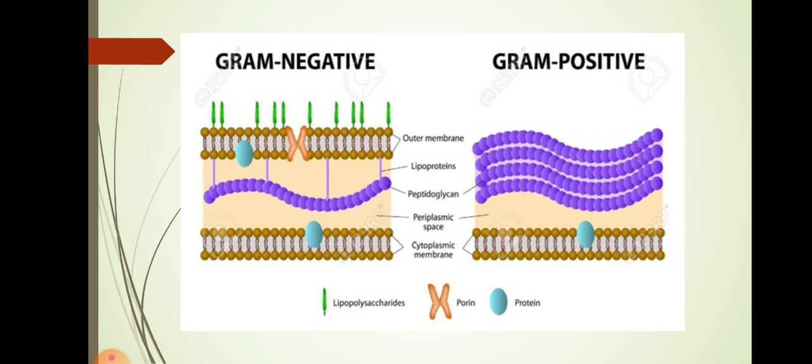Picture of gram-negative bacteria and gram-positive bacterial cell walls. Gram-negative bacteria we can see the cell wall is made up of outer membrane followed by lipoproteins, a thin layer of peptidoglycan followed by periplasmic spaces then cytoplasmic membrane embedded with proteins. Gram-negative bacteria outer membrane bears lipopolysaccharides. Gram-positive bacteria there is no outer membrane. We can see it begins with peptidoglycan layer followed by a cytoplasmic membrane embedded with proteins.